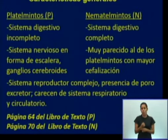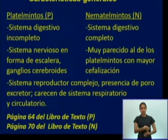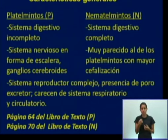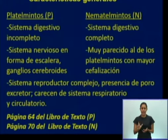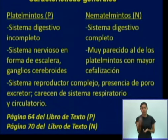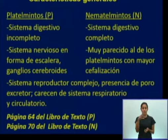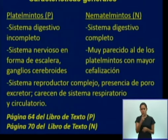Características generales de los platemintos y los nematemintos. En el sistema digestivo: los platemintos tienen un sistema digestivo incompleto — carecen de ano, la boca hace función de boca y de ano. Los nematemintos tienen un sistema digestivo completo. En el sistema nervioso: los platemintos en forma de escalera con ganglios cerebroides, y los nematemintos muy parecidos pero con mayor cefalización, es decir mayor desarrollo de la región anterior. Para los dos en común: sistema reproductor complejo, presencia de poro excretor, y carecen de sistema respiratorio y circulatorio. Pueden profundizar en la página 64 para platemintos y la página 70 para nematemintos.